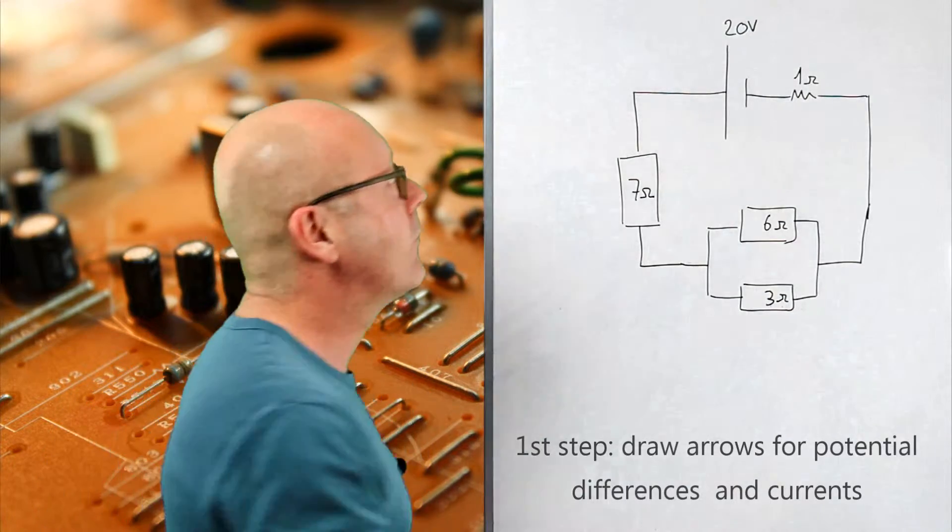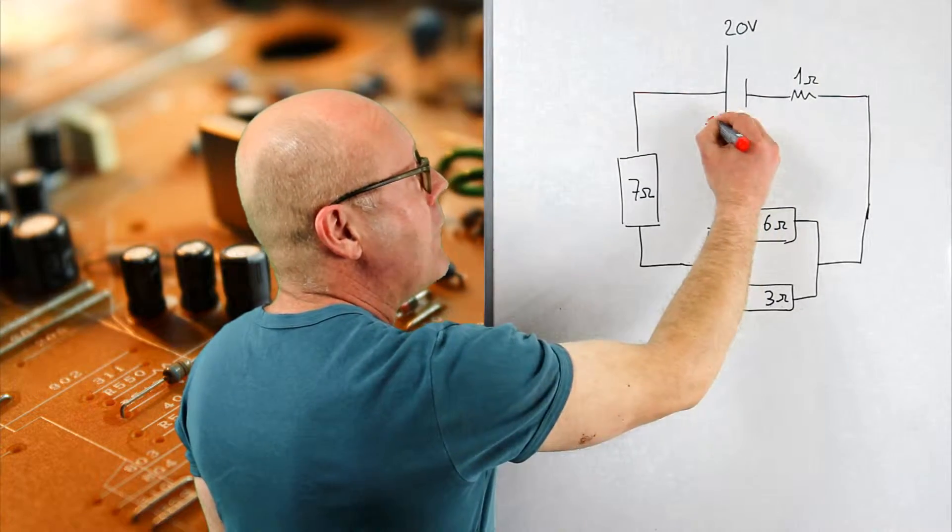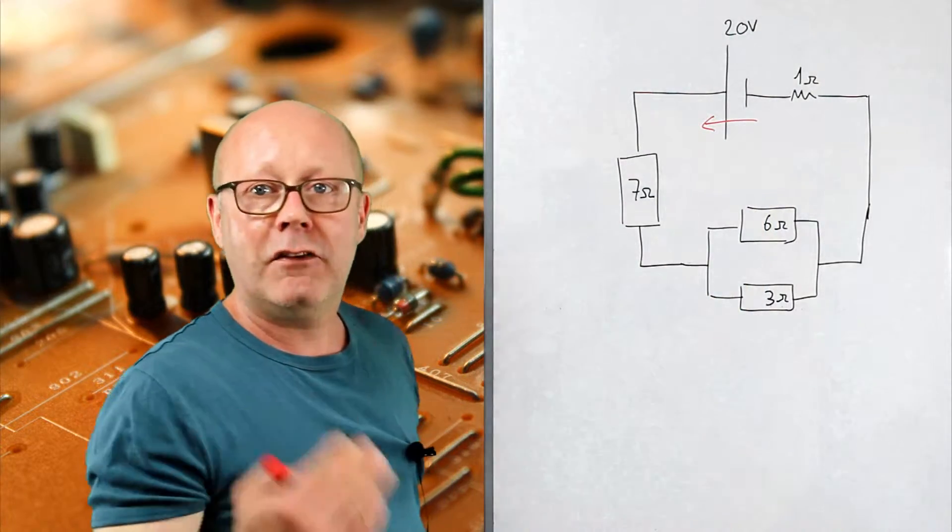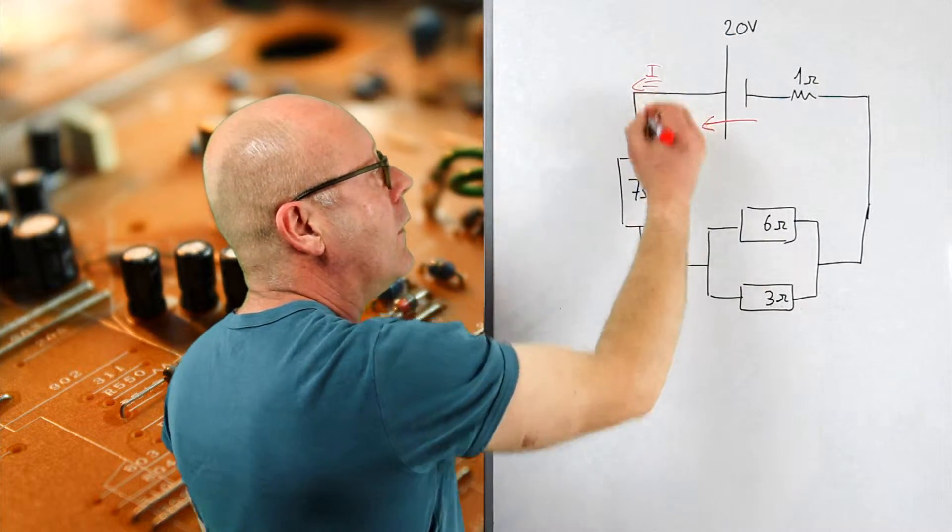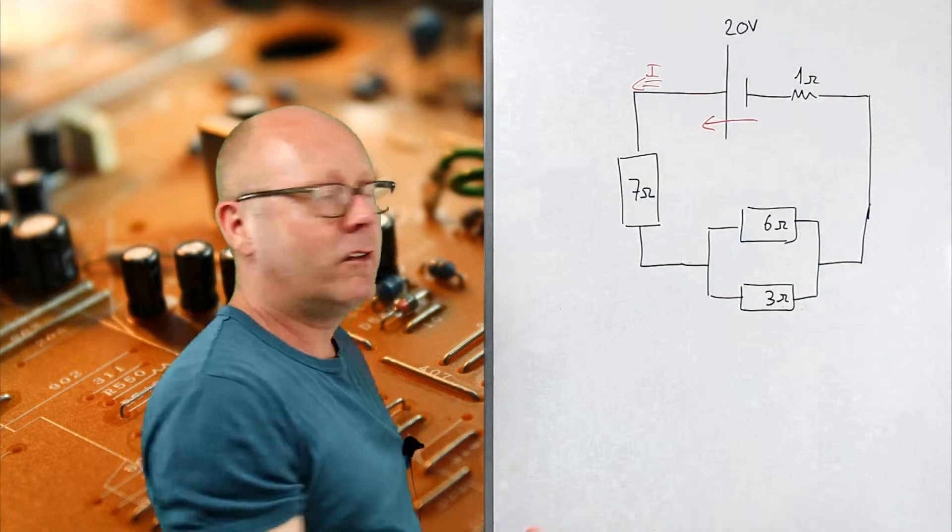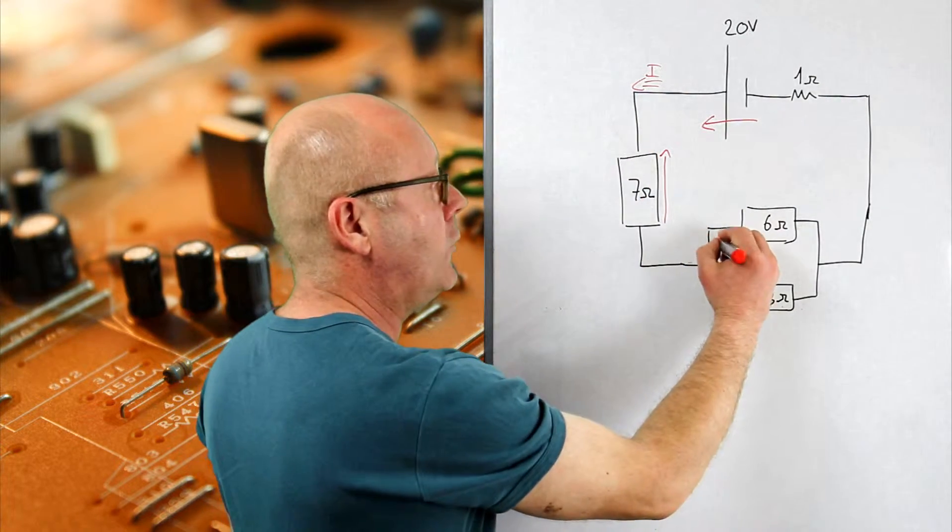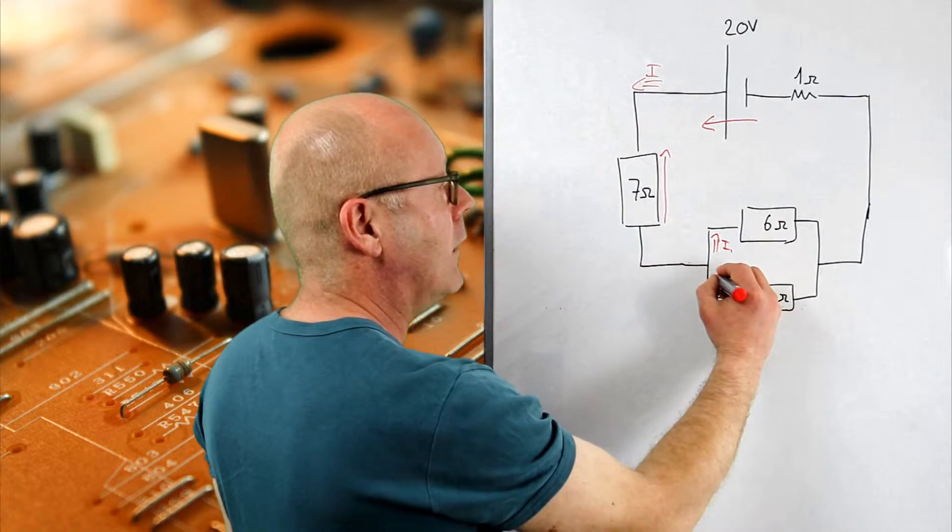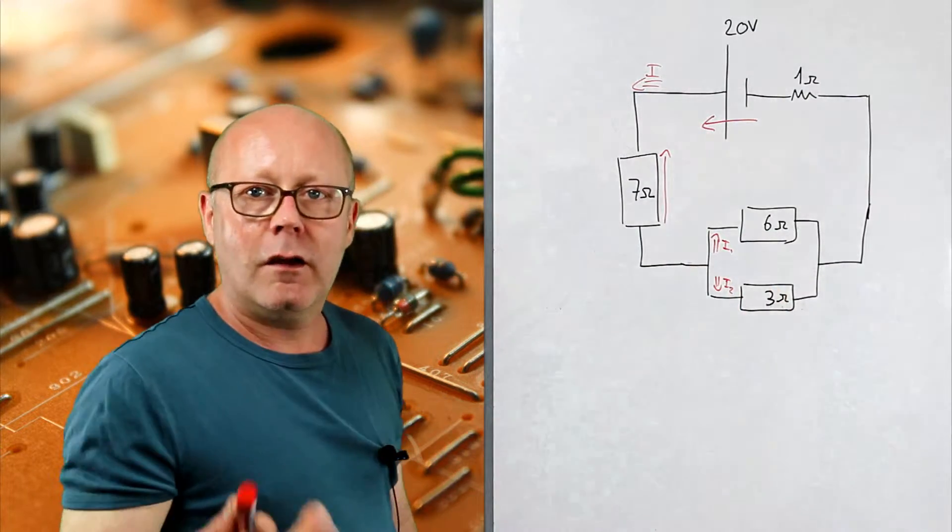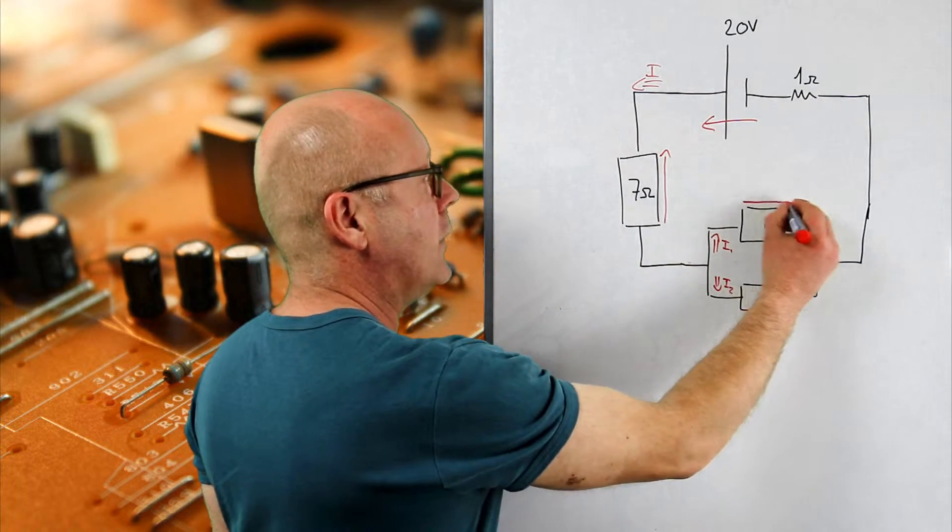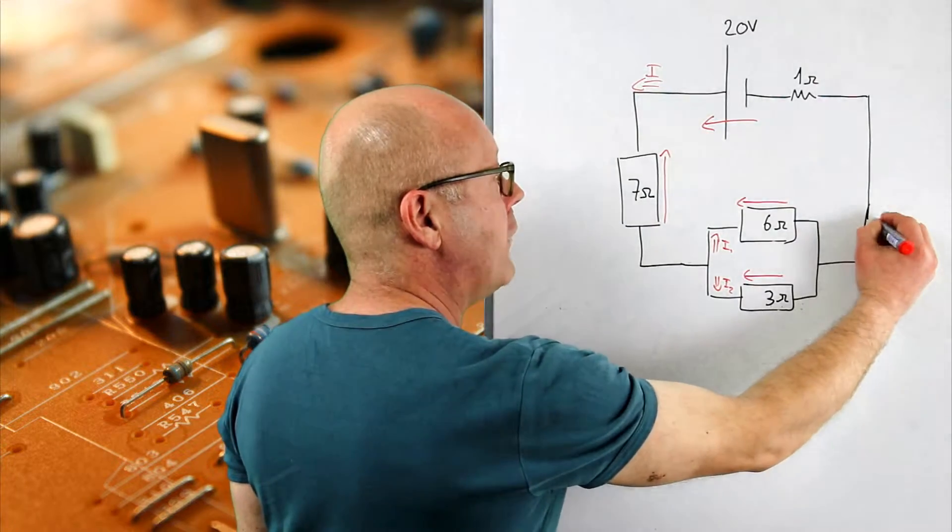So here I've got an emf of 20 volts, so this gives energy to the charges which acts as a pump creating a current. The current is going to meet this resistor so there'll be a potential drop here, and then it meets a junction so it splits in two into I1 and I2. Each of these currents will meet a resistor creating a potential drop, then they meet again and form the original current I.